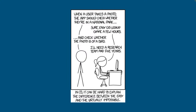The way we motivated our first discussion was this XKCD comic from about 10 years ago: when a user takes a photo, the app should check whether they're in a national park — which is easy with a GIS library — and check whether the photo is of a bird, which used to be extremely hard. She said she'd need a research team in five years. But today this comic no longer makes sense; you just need a Colab notebook in five minutes. We're going to go through a code example where we detect whether a photo is of a bird.